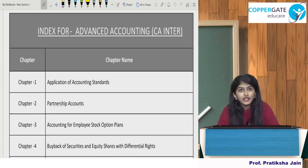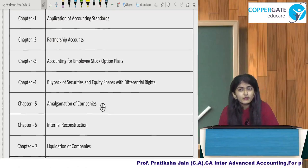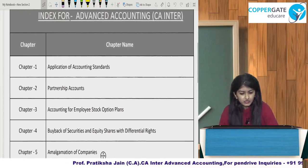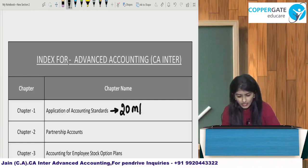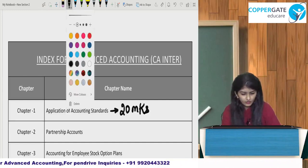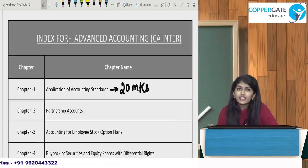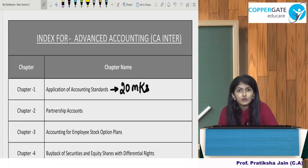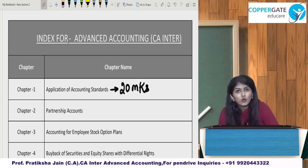Let's look at the index of Paper 5 Advanced Accounting. In total you have 10 chapters. Chapter 1 is Application of Accounting Standards. Friends, this chapter on an average carries 20 marks in the exam. You might wonder why study accounting standards at CA Inter when at CA Final you have Ind AS. But accounting standards are the base — if your base is clear, CA Final will be easy for you, because a strong base is important for everything. So if you know accounting standards well and have a grip, then Ind AS will be easy to understand.